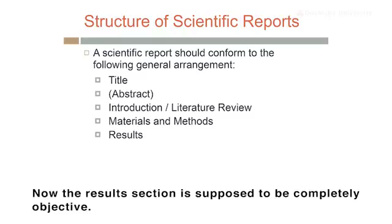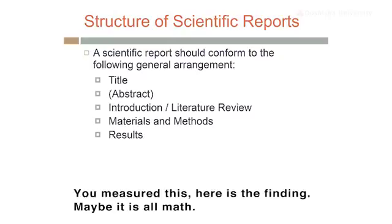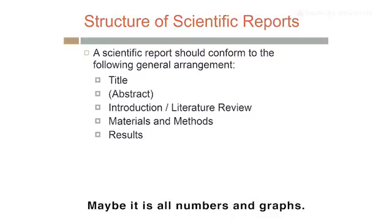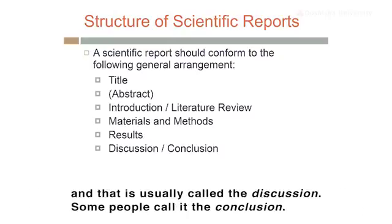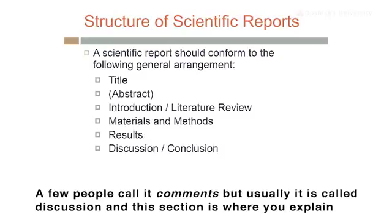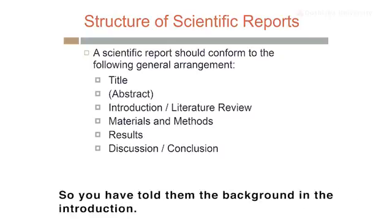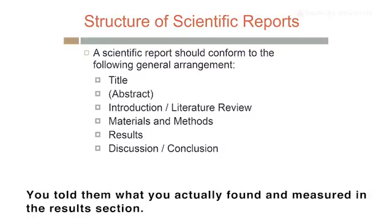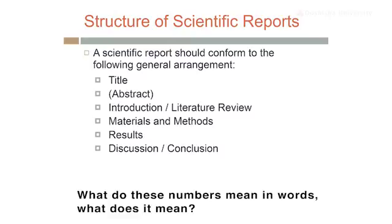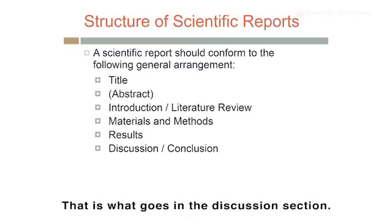After the Materials and Methods section is the Results section — sometimes people call it the Findings. You did this research or experiment, you probably measured things, counted things, tabulated things, collected data and did some analysis. What were the results of that analysis? That goes in the Results section — not in the Methods section, not in the introduction. The Results section is supposed to be completely objective: you measured this, here's the finding.